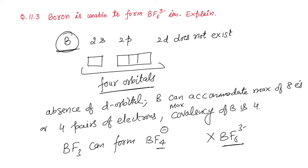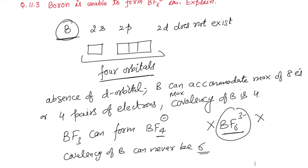Covalency of boron can never be 6. That's why it cannot form BF6^3-. Means, you can write that maximum covalency of boron is 4 only due to the absence of d orbital. That's it. This is the proper reason.